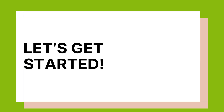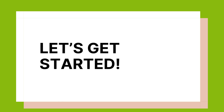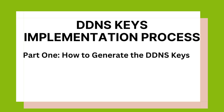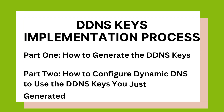Now that you know more about what NoIP's DDNS keys are and how they can be a vital part of managing your hostnames, let's dive into implementing them. The DDNS keys implementation is a two-part process. This video will cover a general overview of both parts from start to finish. Part 1 is how to generate the DDNS keys. Part 2 is configuring Dynamic DNS to use the DDNS keys you just generated. After we finish going over the implementation process, we'll include some helpful tips on managing your DDNS keys moving forward.